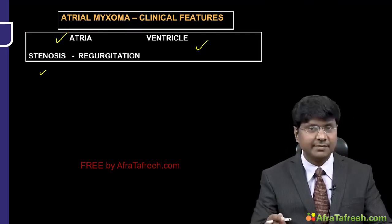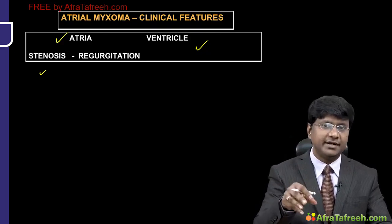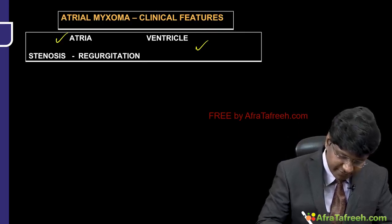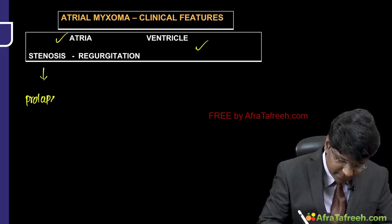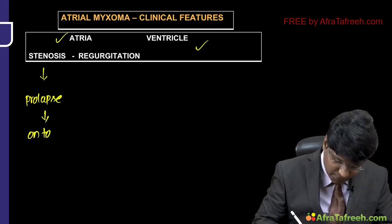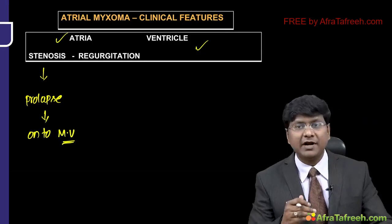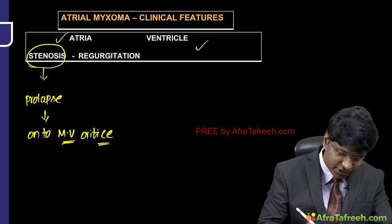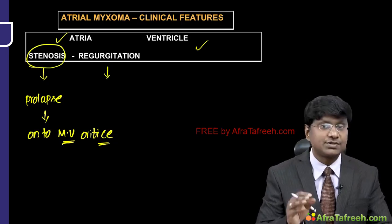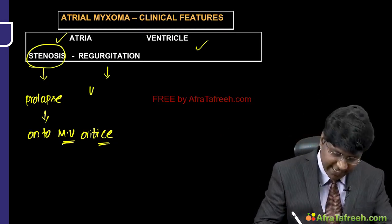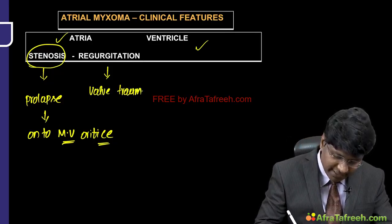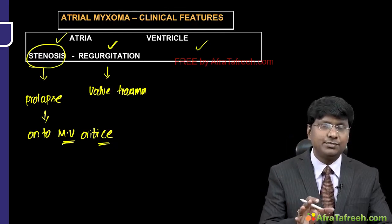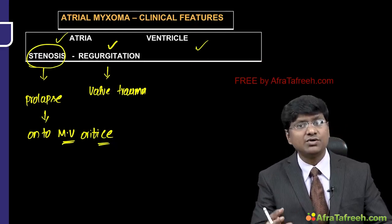Once the atrial myxoma prolapses onto the mitral valve orifice, it gives the picture of mitral stenosis. These myxomas can also cause tumor-induced valve trauma. Once there is trauma to the mitral valve, the patient can have mitral regurgitation. So sporadic tumors originating from the interatrial septum can present as mitral stenosis (MS) or mitral regurgitation (MR).